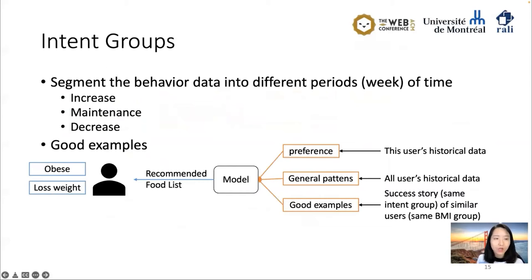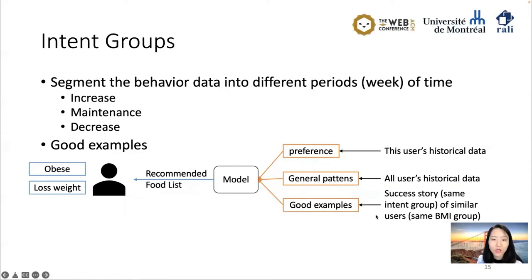We segment behavior data into different time periods as increase, maintenance, and decrease intent groups — we call these 'good examples.' For instance, consider an obese user who wants to lose weight. Our model considers the user's preferences, trained from their historical data, and also the general pattern learned from all users' historical data. Our model also considers good examples — the successful story of a similar user, meaning another obese user who actually lost weight. This data is called good examples and is used to train our model for recommendation.